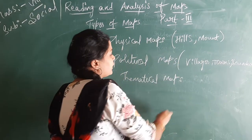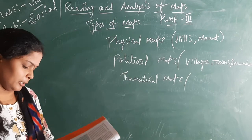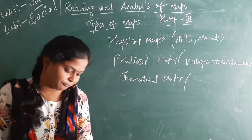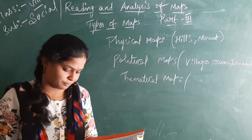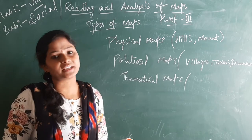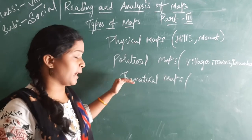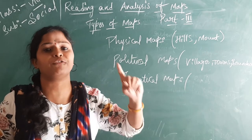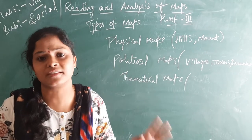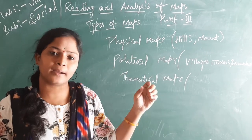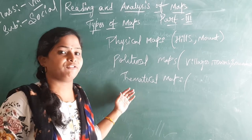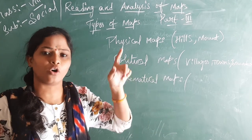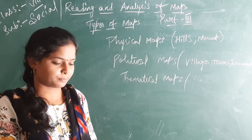Next is thematic maps. How do these thematic maps help us? Usually a map focuses on only one aspect. What is a thematic map? This map will focus on only one object. For example, if you are calculating the population density, the thematic map will focus only on one aspect.